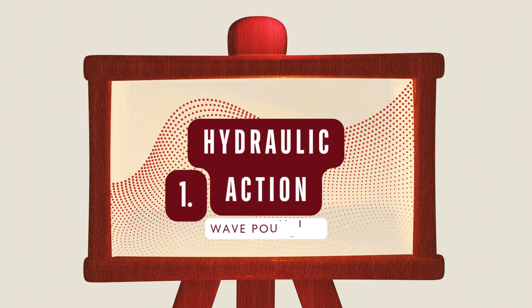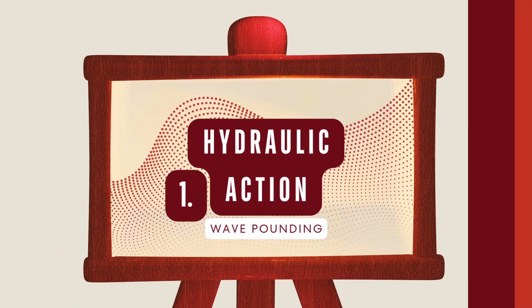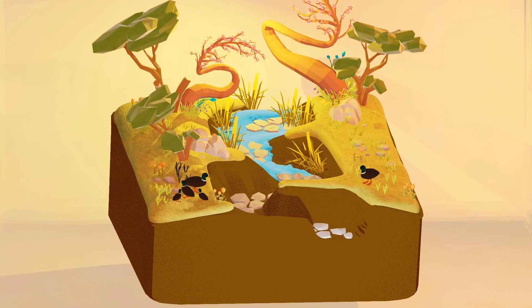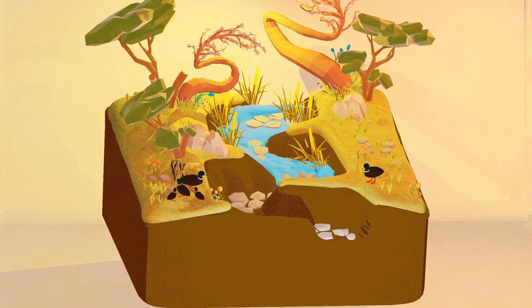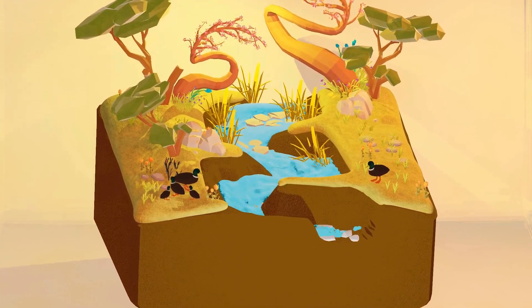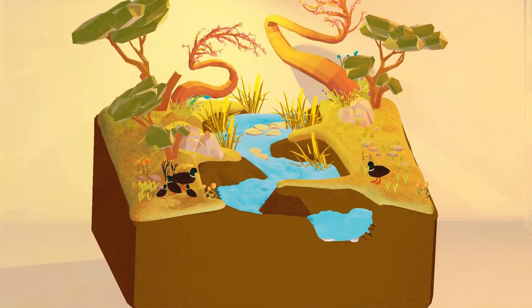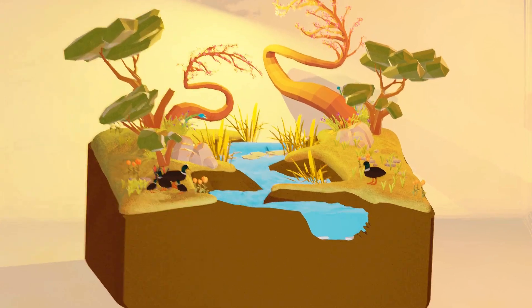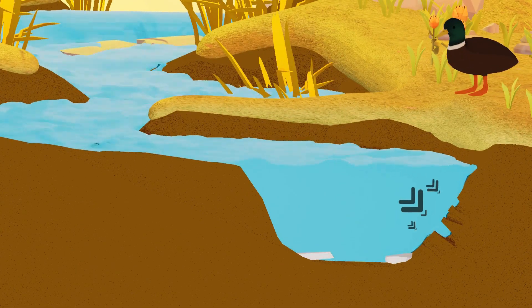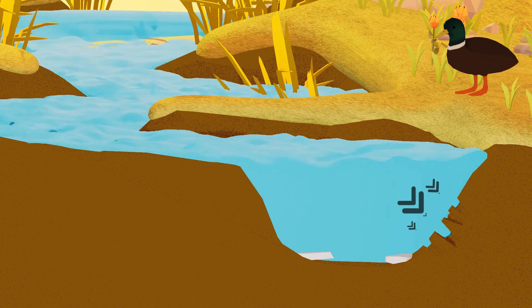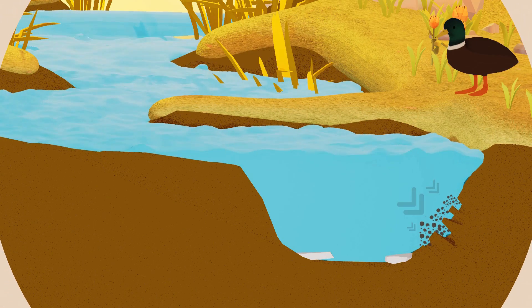Step one: hydraulic action. Hydraulic action, also known as wave-pounding, is when the force of the water itself erodes the land. In rivers, fast-flowing water forces air into cracks in the rock. The pressure builds up, causing the rock to weaken and break apart.